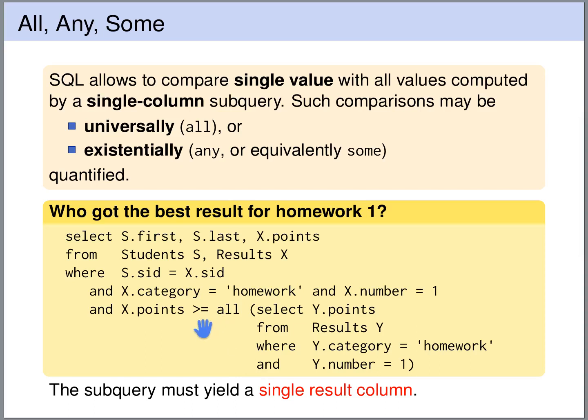If we write all, then it must be greater or equal than all the values computed by the subquery. There is one important restriction. The subquery must compute a single column table. And this is of course guaranteed here, because we select a single column for the output.